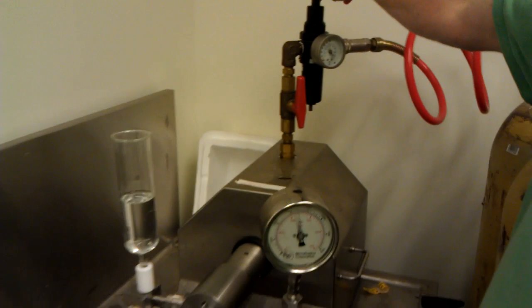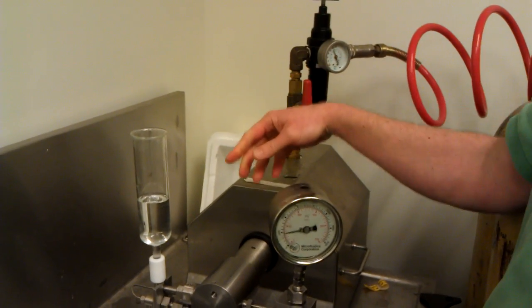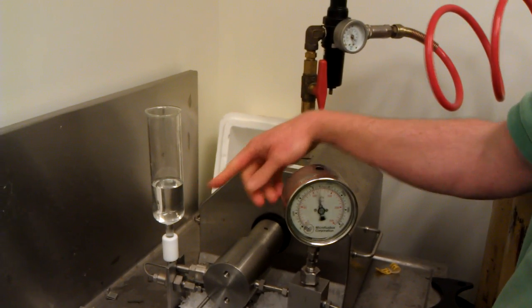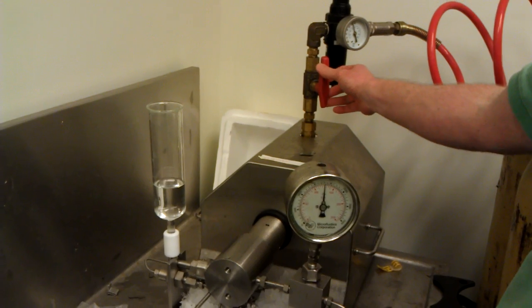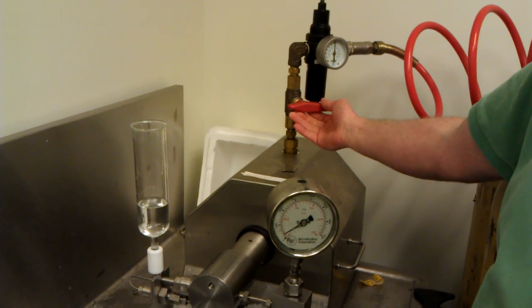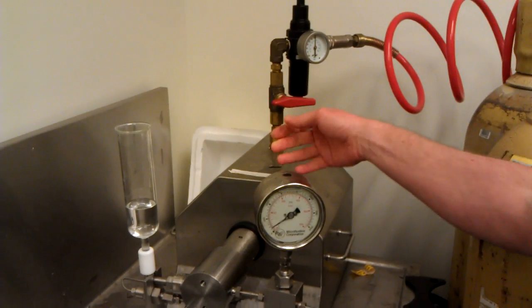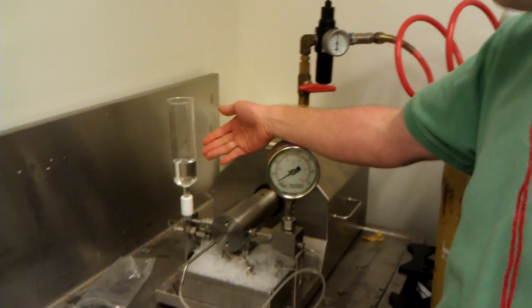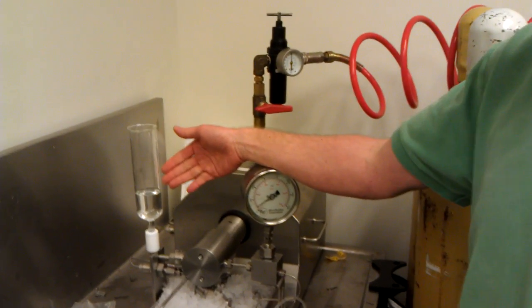As you increase the pressure, the unit speeds up. You should always adjust your pressure to the full funnel because you can see that the sample goes away really quickly. At this point I would turn off the instrument because I'm at the desired pressure, load my sample, and proceed with the lysis.